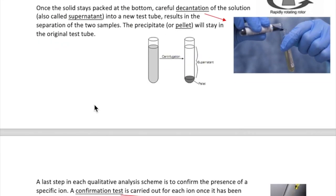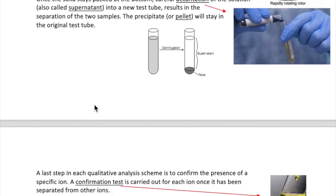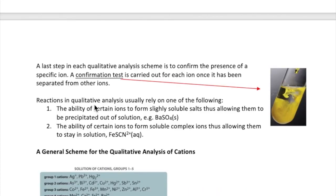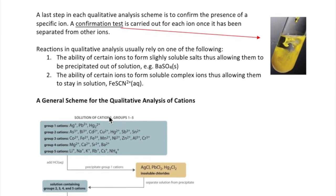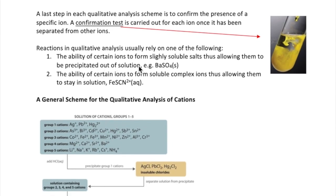The term qualitative analysis is used because we are not testing for the quantity of each ion, merely its presence. Since qualitative analysis requires selective precipitation of specific ions, two main reactions are typically used to change the state of a specific ion. The first is precipitation reactions, which means adding a counter ion that will cause a specific ion to form a precipitate.